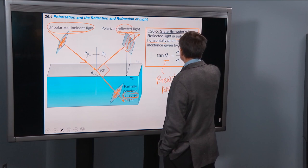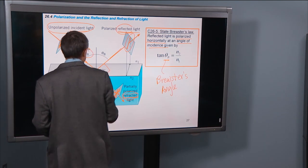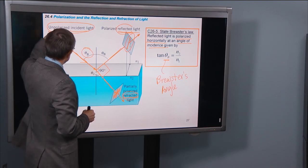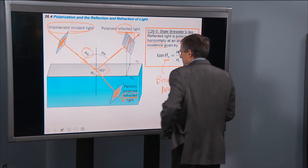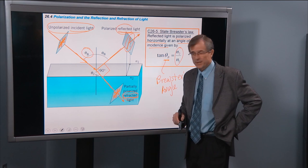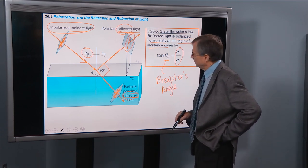It's an angle of incidence. I've denoted here θB, Brewster's Angle, in this diagram, and all you need is the ratio of the two indices of refraction in order to calculate it.